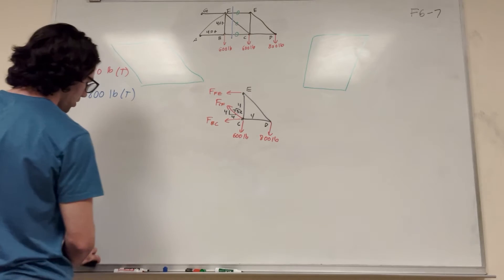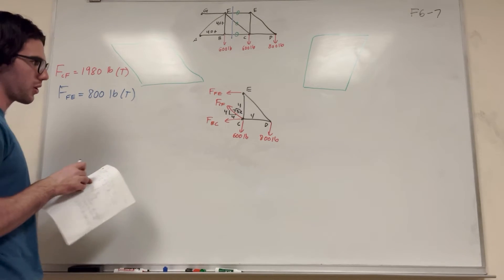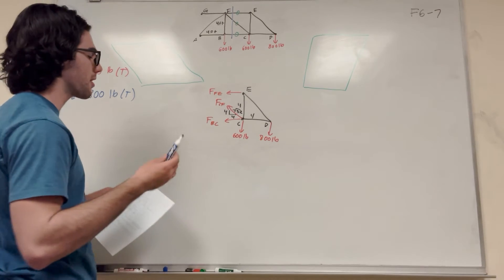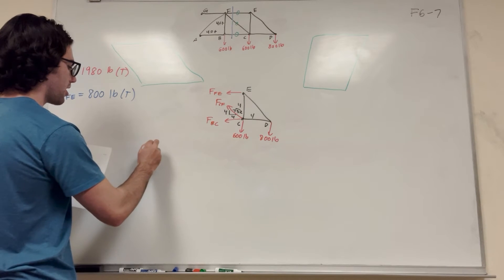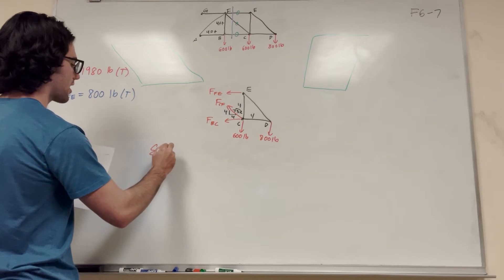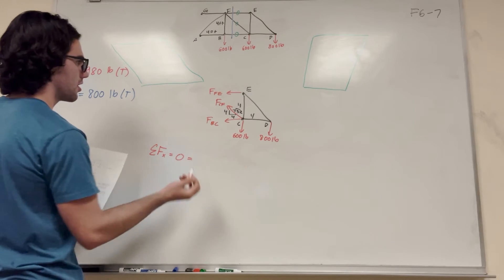So then, now all we have to do is do one more thing. So we can do sum of the forces of X, or you can find the moments. Either one's going to work. I'm going to do sum of the forces of X. Sum of the forces of X. We know it's going to be equal to zero. So let's add them up.